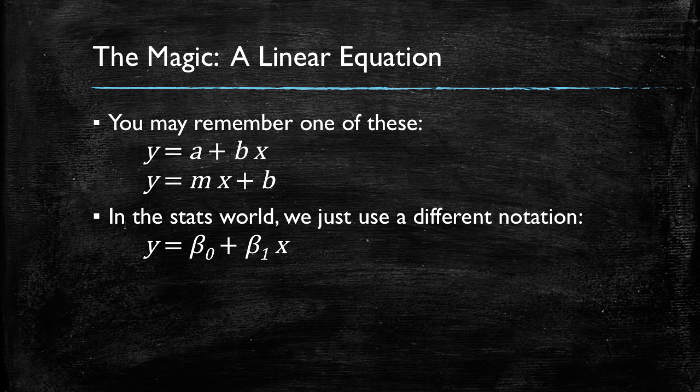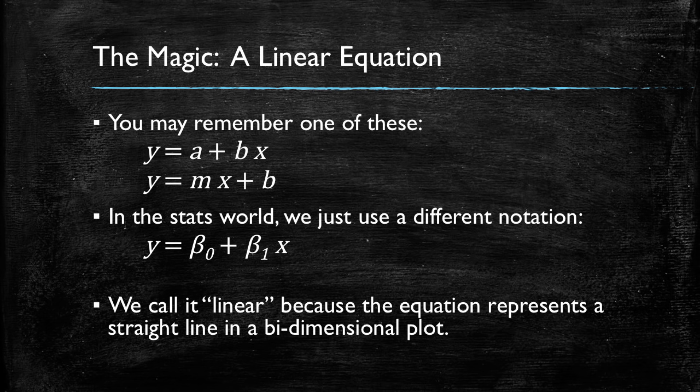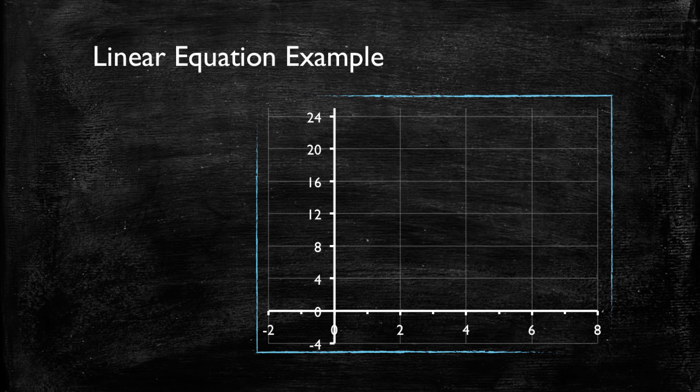As a recap, we call these linear equations because they will appear as a straight line if we plot them in a two-dimensional plot. Let me show you an example of a linear equation. Remember our model is y equals beta zero plus beta one times x, and let's simply give numbers to those betas. Let's say that we have a linear equation y equals four plus two x.